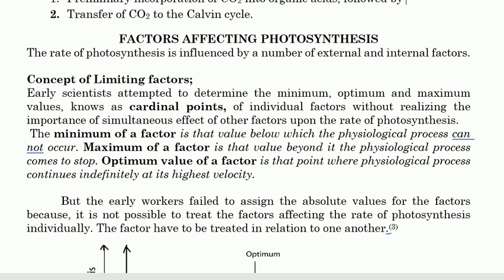The minimum of a factor is that value below which the physiological process cannot occur. The maximum of a factor is that value beyond which the physiological process comes to a stop. And the optimum value of a factor is that point where the physiological process continues at its highest velocity — the minimum is the lower limit, the maximum is the upper limit, and the optimum is where the process runs very fast.